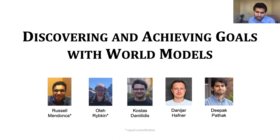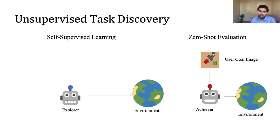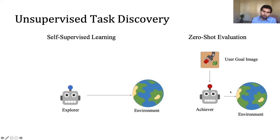This is the idea we conceptualize in a recent paper called 'Discovering and Achieving Goals with World Models.' At training time you do self-supervised learning where you discover goals on your own; at test time, a human shows you a goal image and you solve it. Challenges: you must discover goals on your own at training time, learn to achieve them, and all of this should happen from images — raw data — without assuming access to the state space.